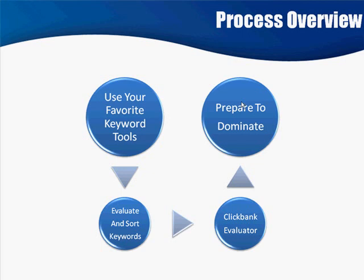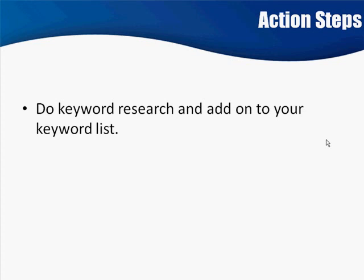For action steps, just one simple thing: do your keyword research and build that list. Punch it into the ClickBank evaluator so you know what to expect. Then that list is ready for the next module where we actually create the landing page. I'm going to make this a separate video — in the next video I'm going to show you how I build my list, how I go through and sort all the data, and filter things out so I'm dealing with just manageable chunks of it.